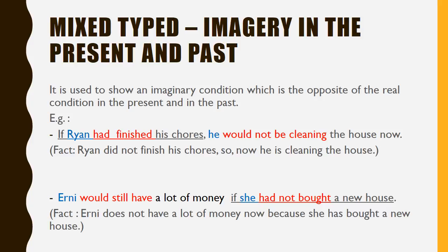Mixed Type: Imaginary in the Present and in the Past. It is used to show an imaginary condition which is the opposite of the real condition across both time frames. For example: 'If Ryan had finished his chores, he would not be cleaning the house now' — the fact is Ryan did not finish his chores, so now he has to clean. Another example: 'Ernie would still have a lot of money if she had not bought the new house' — the fact is she does not have money now because she bought the house.